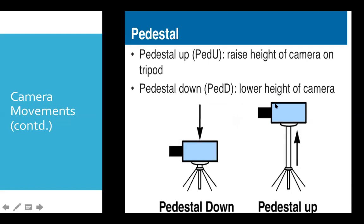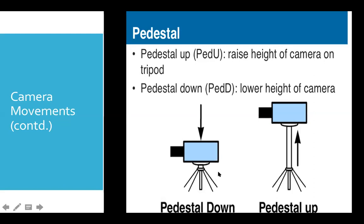Let's talk about pedestal movement of camera. Here the camera is mounted on a tripod stand. When the camera moves upward, it's pedestal up movement, and when it goes down, it's pedestal down movement.